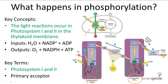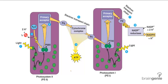Before we delve into the details of phosphorylation, let's look at a brief summary of the inputs and outputs. The inputs include water, NADP+, and ADP, whereas the outputs include oxygen, NADPH, and ATP. Each photosystem contains chlorophyll A and accessory pigments — chlorophyll B and carotenoid.